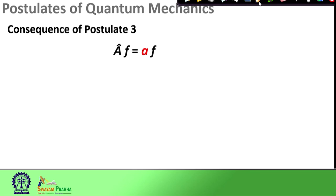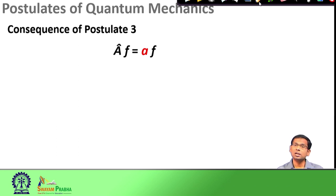The wave function has all the information about the state, and postulate 2 said that if you want to obtain an idea about any classical observable, quantum mechanics provides us with the required operator corresponding to that classical observable. In postulate 3, if we apply this quantum mechanical operator on our state function, the only allowed observables that would come out of the experiment are going to be the eigenvalues of this operator.